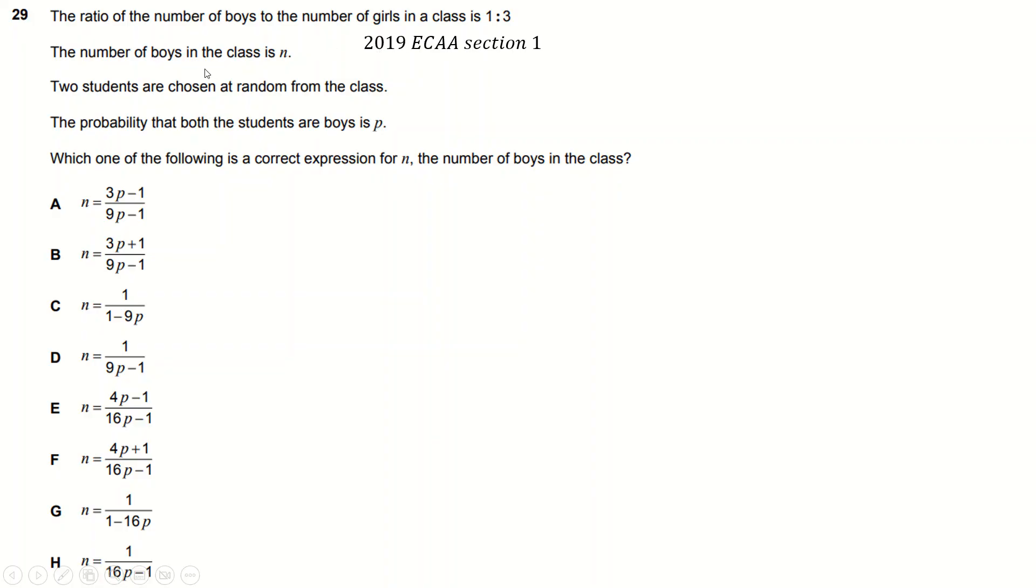Another one, so from this paper here, number of boys is n, one to three means that the number of girls is 3n, and that means there are 4n in total. Two are chosen in random class, probability the both of boys is p. So that means that if we draw a tree around, which I can't be bothered to do, the chance of taking a boy is n over 4n, and then the chance of taking another boy is n minus one over 4n minus one.